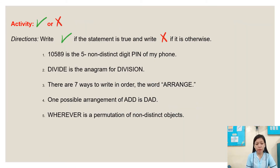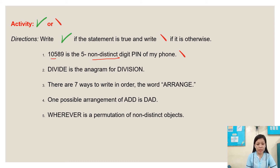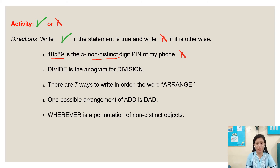We have here an activity. Direction: write CHECK if the statement is true and write X if it is otherwise. Number 1: '10589 is the 5 non-distinct digit pin of my phone.' The answer is wrong, because if we say non-distinct, there must be the same number. Since 10589 has no repeated number, it is wrong.